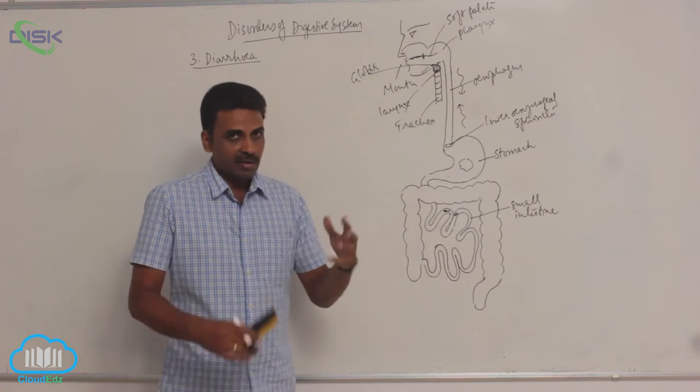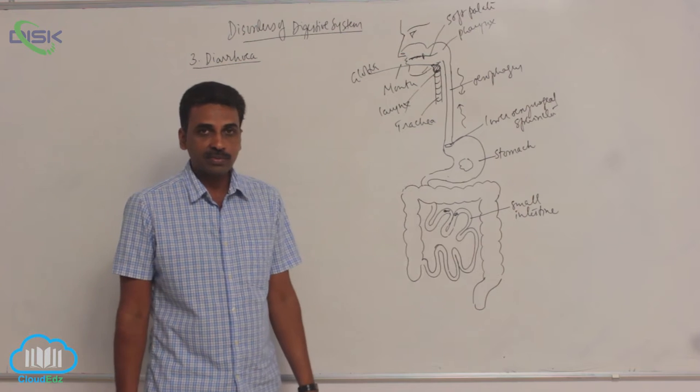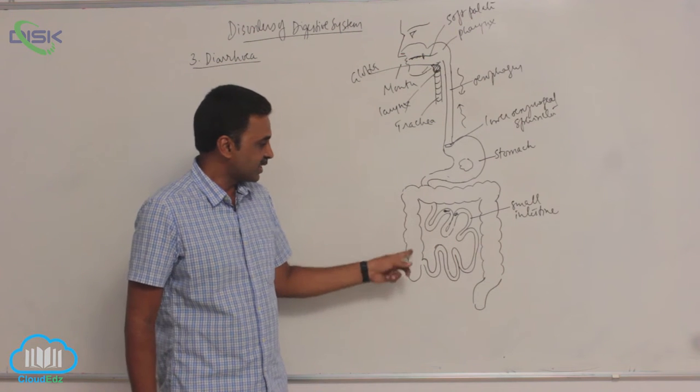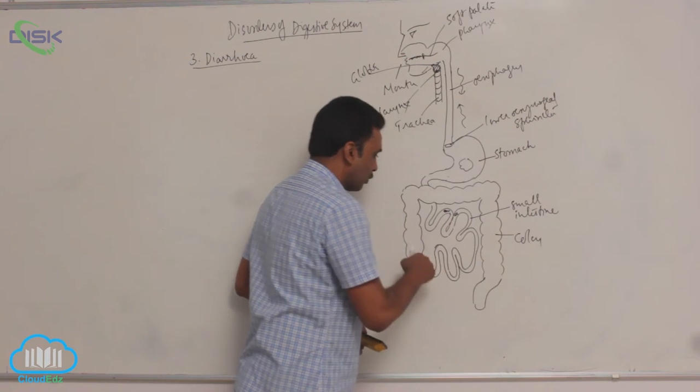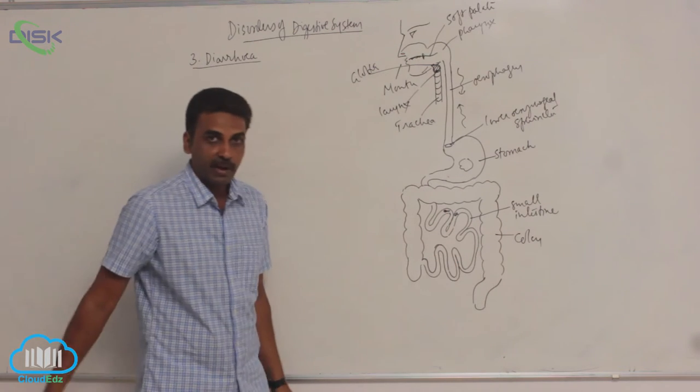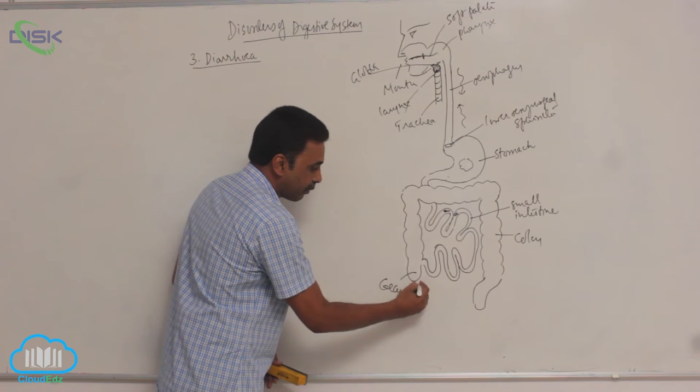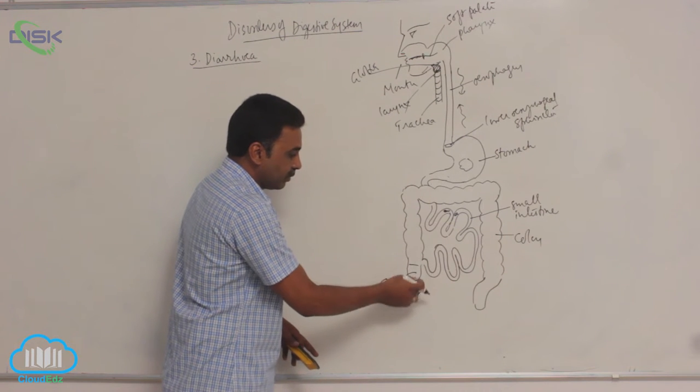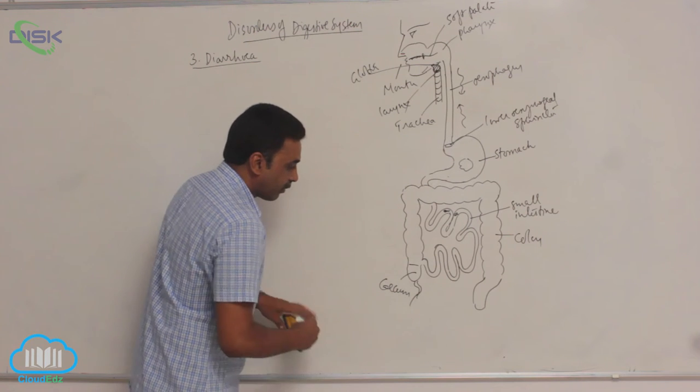Here the complete process of digestion is completed and absorption occurs. Around one and a half liters of fluid is entering into the large intestine. See, this is colon. Colon is the second part of large intestine. We have got cecum here with vermiform appendix.